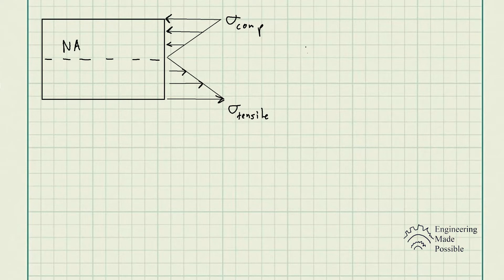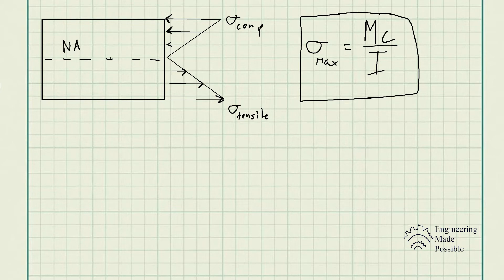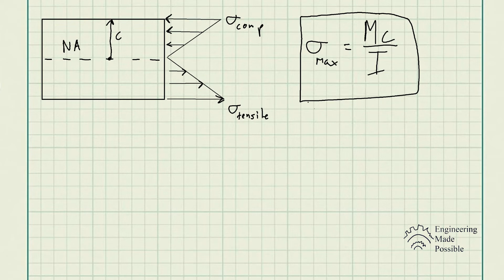Hopefully this axial stress developed due to bending is starting to make sense. Here is the equation you'll use: the maximum axial stress equals the bending moment times C, divided by the area moment of inertia (I). C is the distance from the neutral axis to the top of the beam. The moment of inertia depends on the geometry of the cross section — an I-beam or T-beam would give different values. This is the equation we'll use after drawing our shear and moment diagrams.